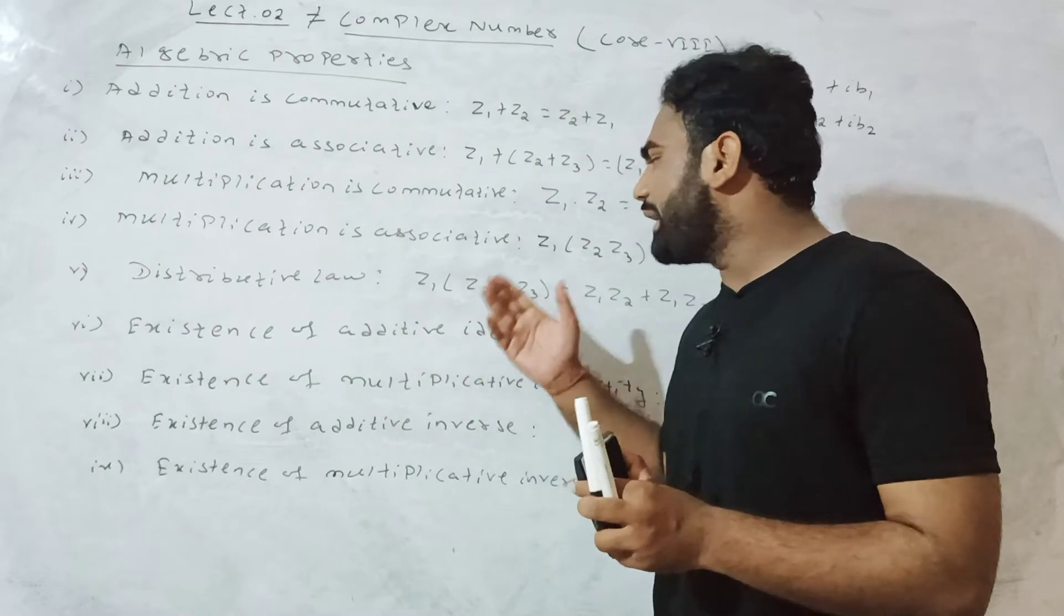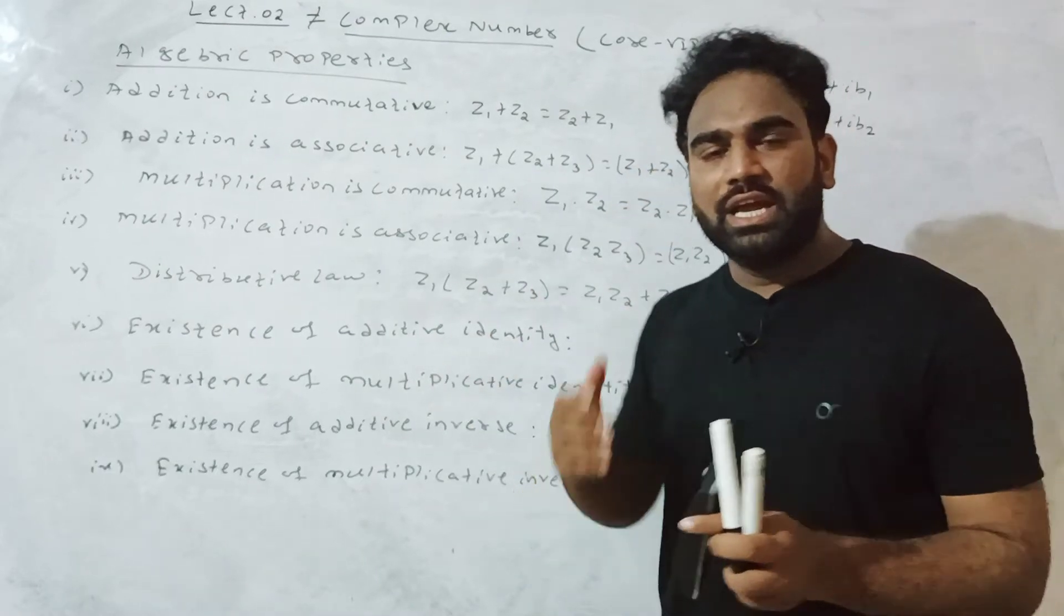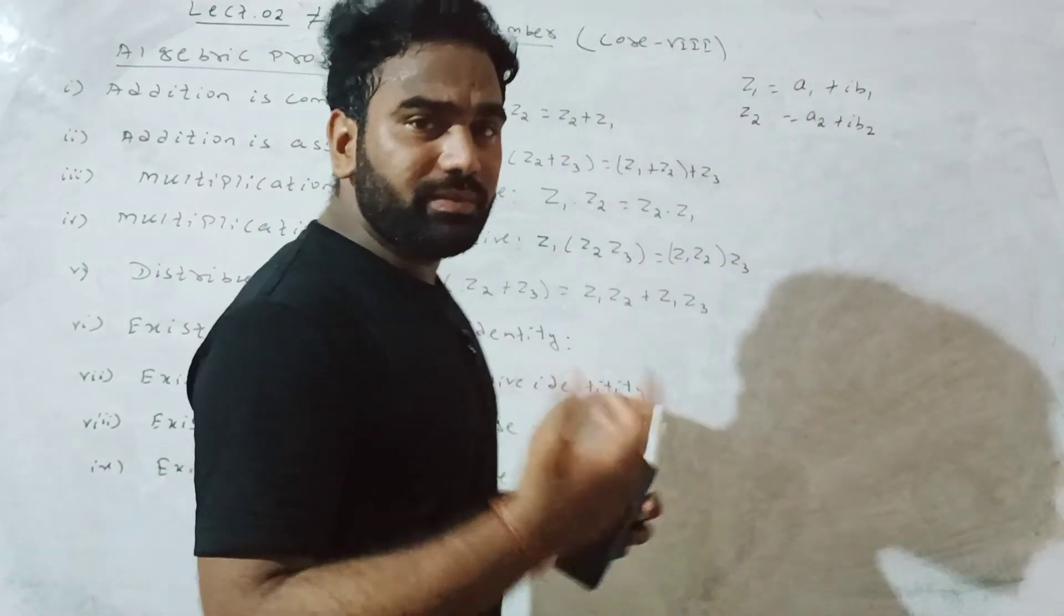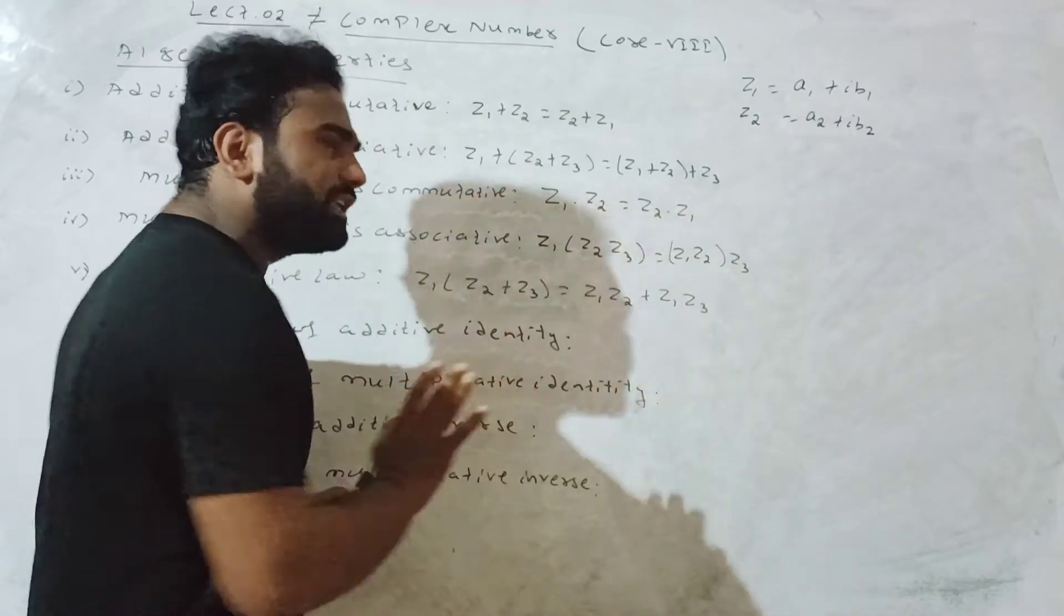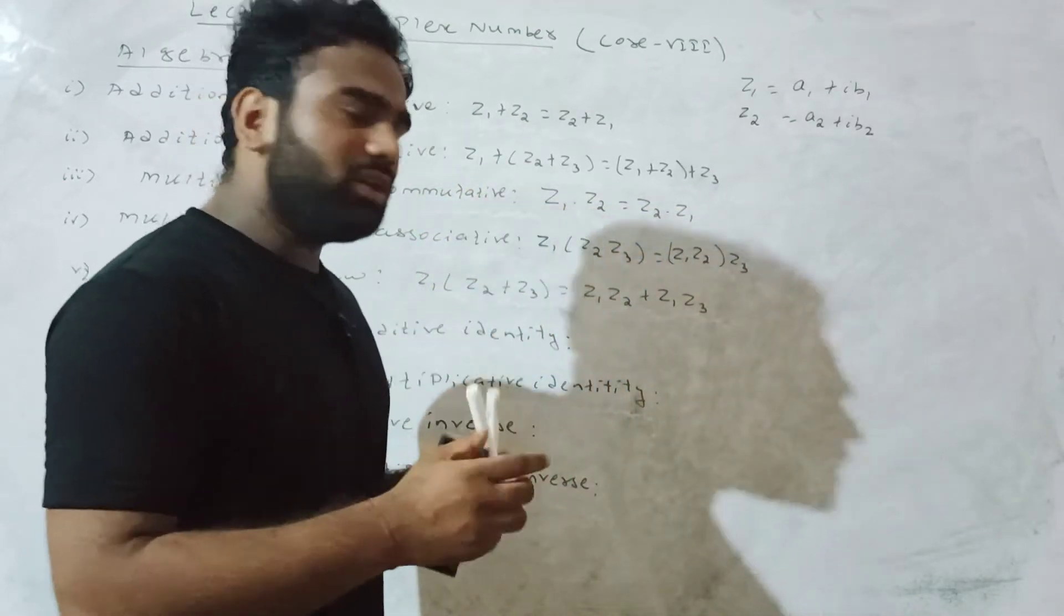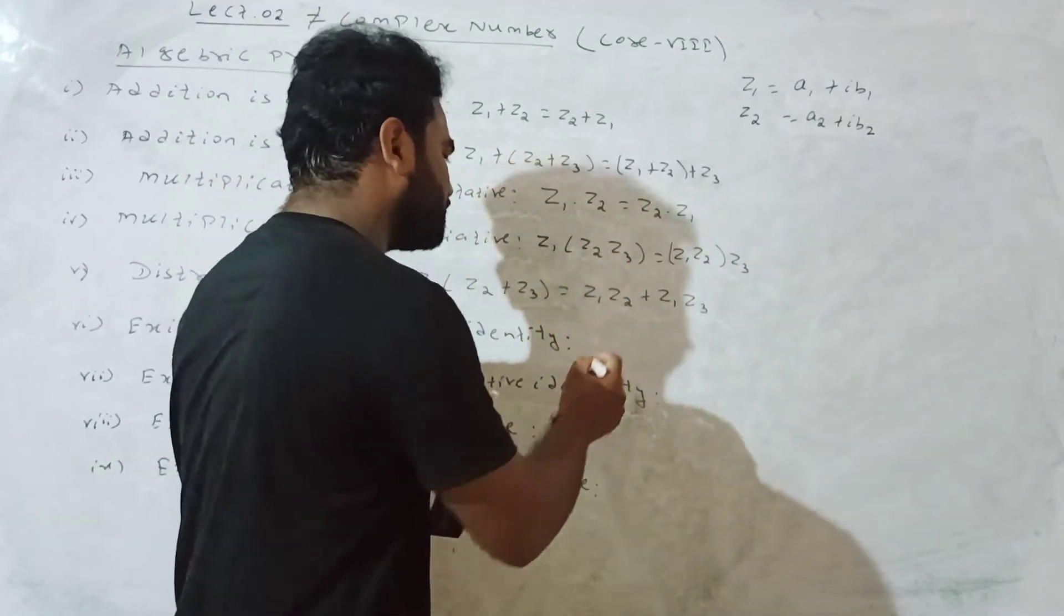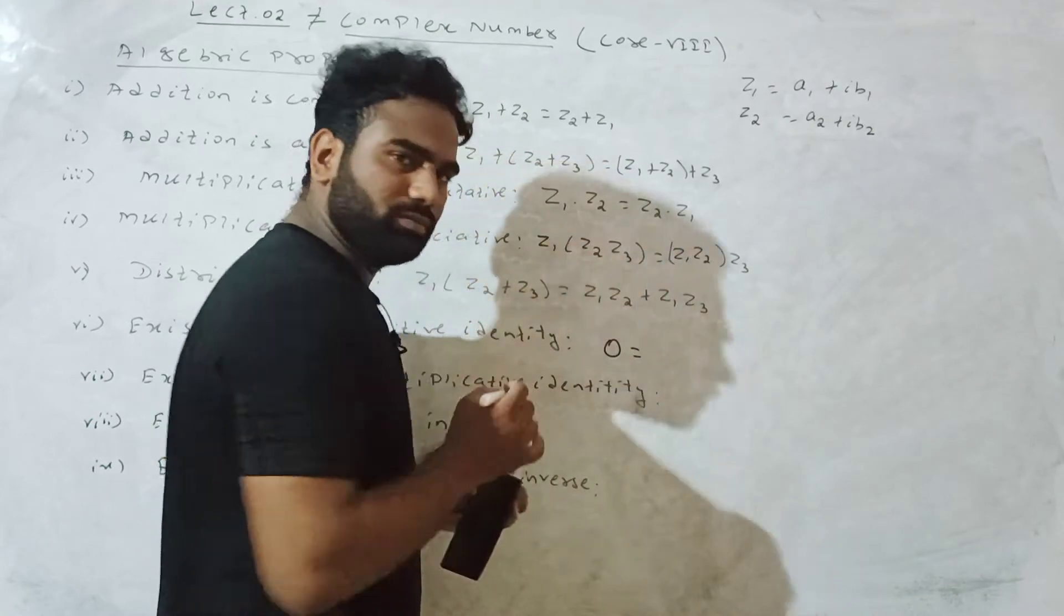Existence of additive identity. For any complex number z, there exists a complex number zero such that z plus zero equals z.